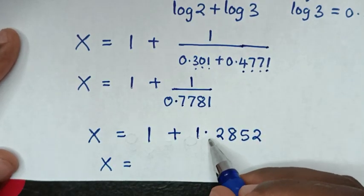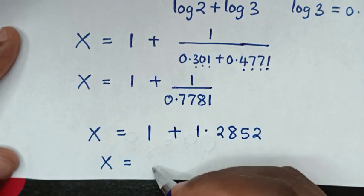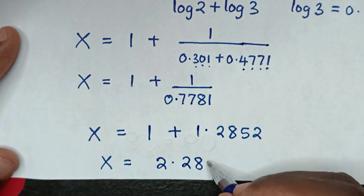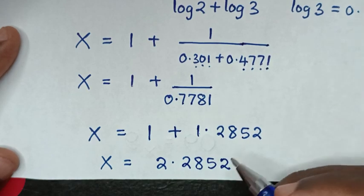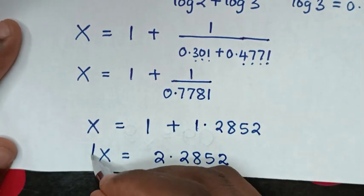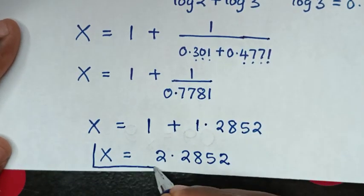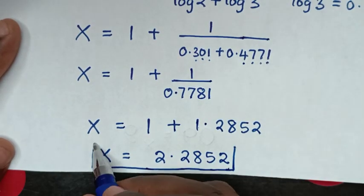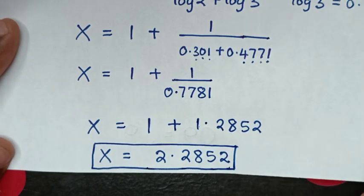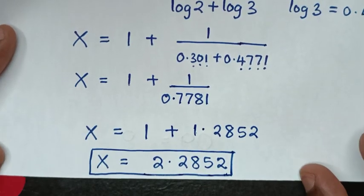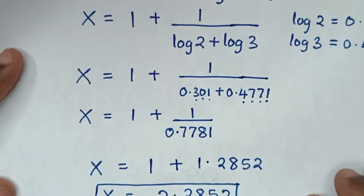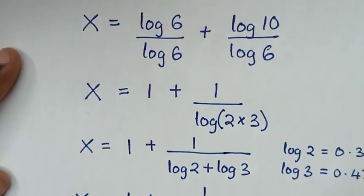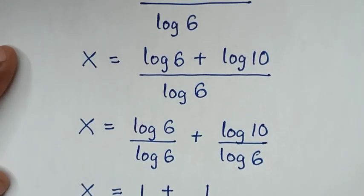Then x is equal to 1 plus 1.2852, which is 2.2852. Therefore this is the final answer for the value of x in this problem. Thank you, don't forget to subscribe to my channel and see you in the next video, bye bye.